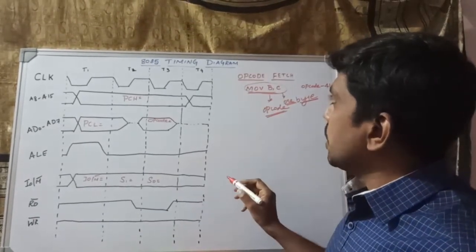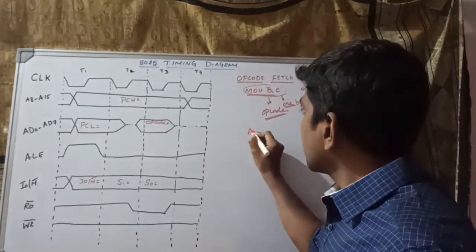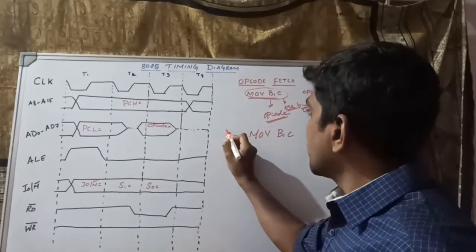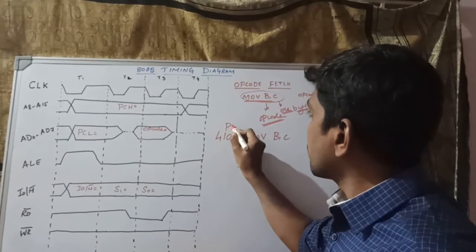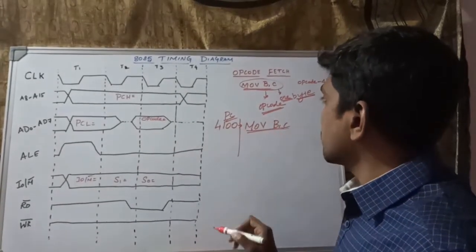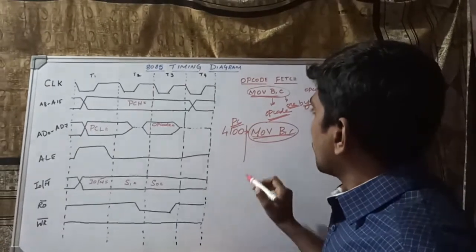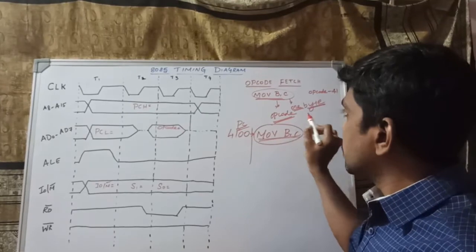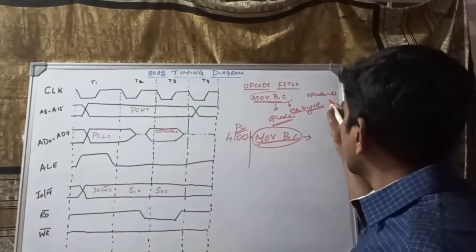Before drawing the timing diagram, first initialize the program counter value for the specified instruction. The instruction is MOV B, C. Assign the program counter address location: 4100H. At this location, the microprocessor reads the instruction MOV B, C. This is human-understandable language, so first convert it into machine level language. The machine level language of MOV B, C is 41H.